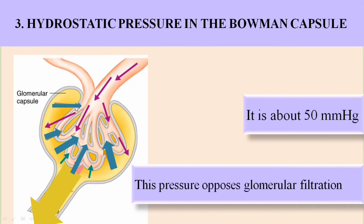The hydrostatic pressure by the Bowman's capsule — the pressure created by the filtrate present in the Bowman's capsule — is about 50 mmHg. These two pressures, the hydrostatic pressure of the Bowman's capsule and the colloidal osmotic pressure of the glomerular capillaries, are the opposing forces that resist filtrate formation. Together, all three pressures collectively determine the rate of glomerular filtrate formation.